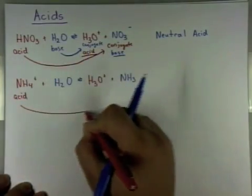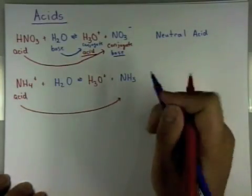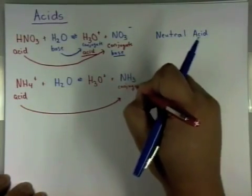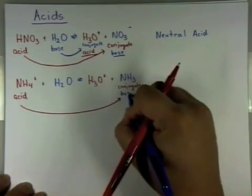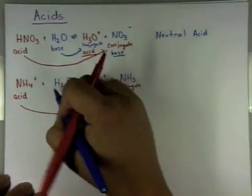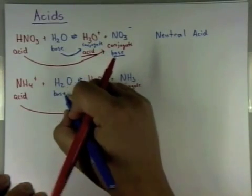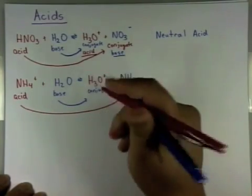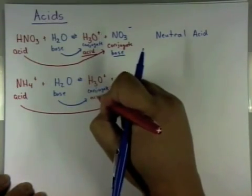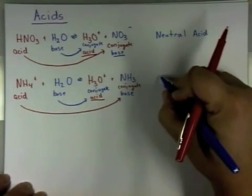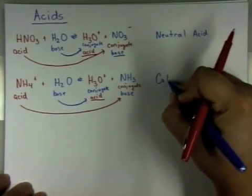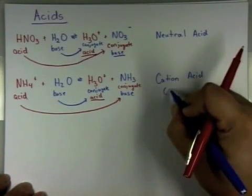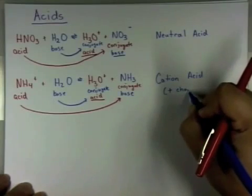Now, what you've got to also understand is that these are equilibrium reactions. They move left to right and right to left. So reading left to right, NH3 is our conjugate base, and NH4 is our acid. But if we read right to left, then NH3 could very well be our base, and NH4+ could be our conjugate acid. So it doesn't matter which way you read, you have to keep in mind that both sides could be conjugate acid or bases based on how you read it. This is a cation acid, a positive charged acid.